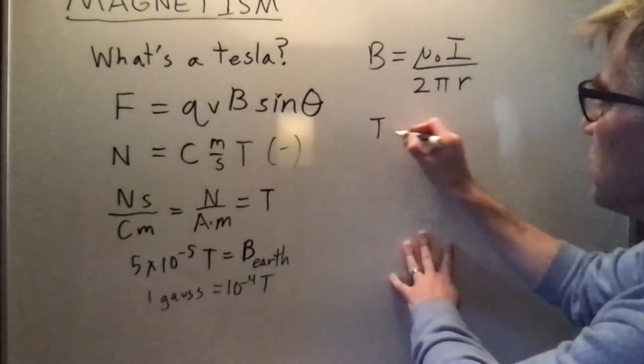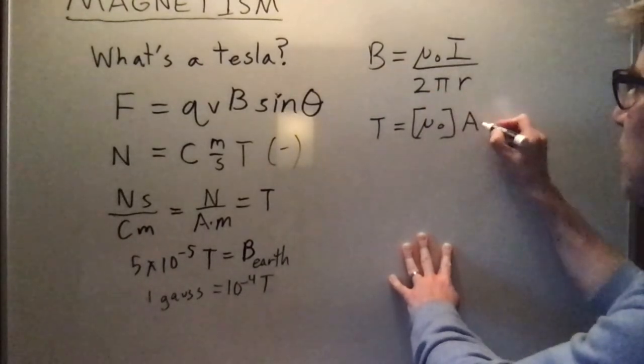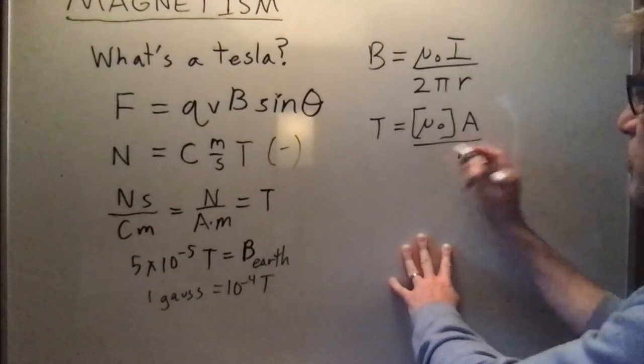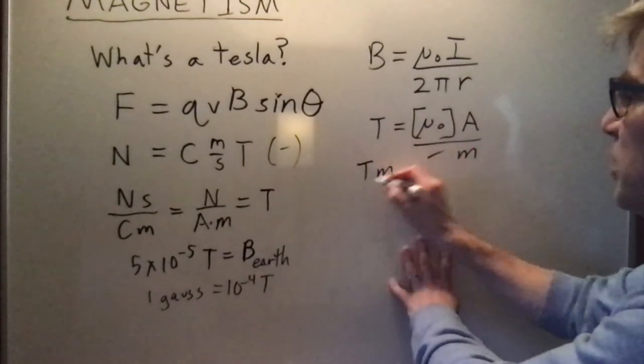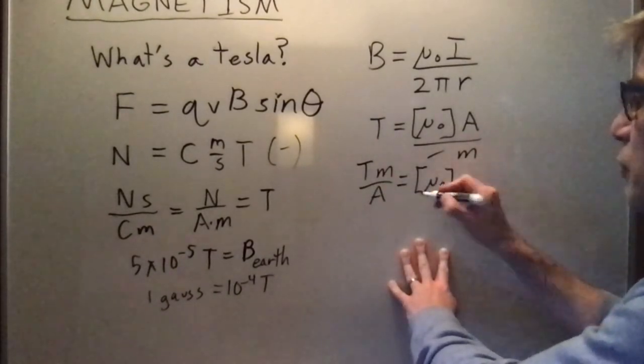B is in Tesla, then we've got mu naught has some weird dimensions, current is in amps, and radius is in meters, and two pi is just a number. So Tesla meter per amp are the dimensions, the units, of mu zero.